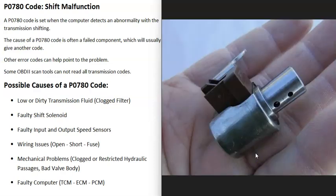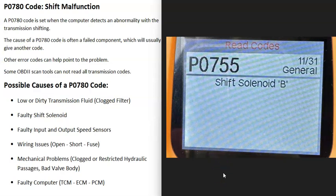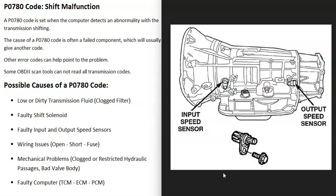The next possible cause is a bad shift solenoid. Transmissions have a lot of solenoids built into them to help shift gears and move fluid around. If one goes bad, that's going to cause problems. As mentioned, you're very likely going to get another code. For example, if you also get a P0755 code for shift solenoid B, it's a good idea to locate that solenoid in your particular transmission and do some tests on it.